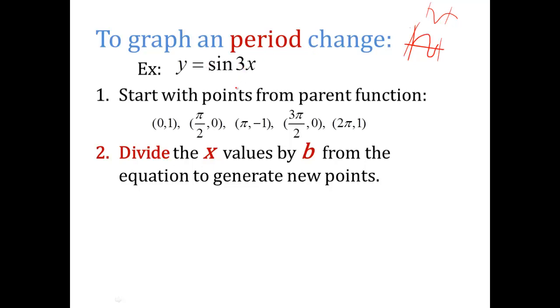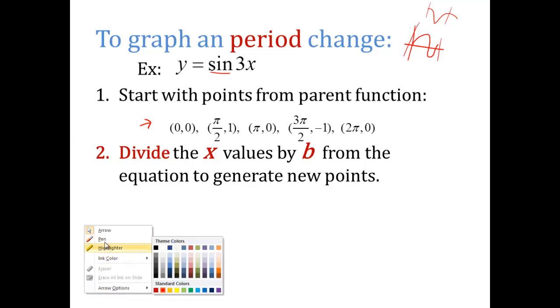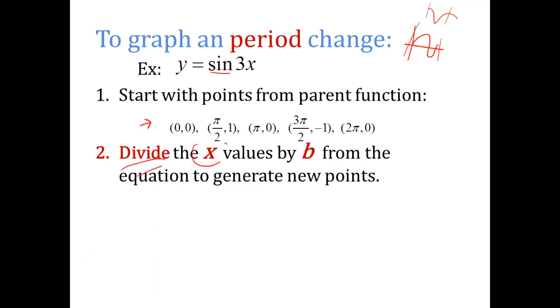So here's an example problem. But here are the steps you're going to take. You're going to start with the points from the parent function. So in this example, it's sine. So here's the points from the sine function that I know from parent function. And what I'm going to do to find period changes is I'm going to divide. Notice it's divide, not multiply. Yesterday we multiplied, today we divide. We are dividing the x values this time by b from the equation to generate our new points. I want us to get new points to plot on our graph.